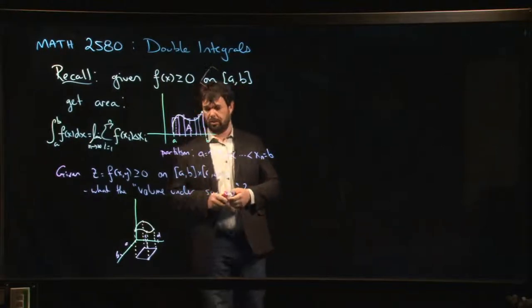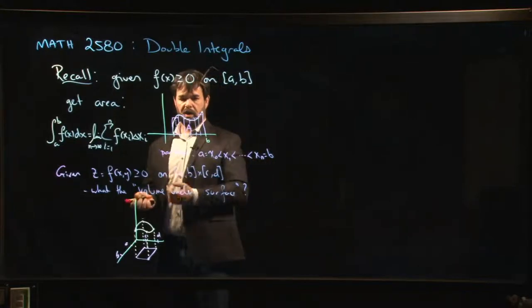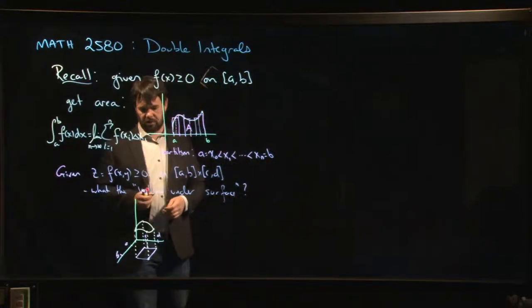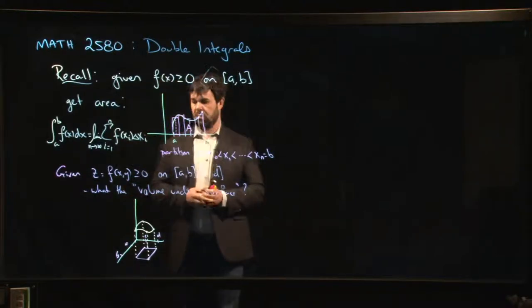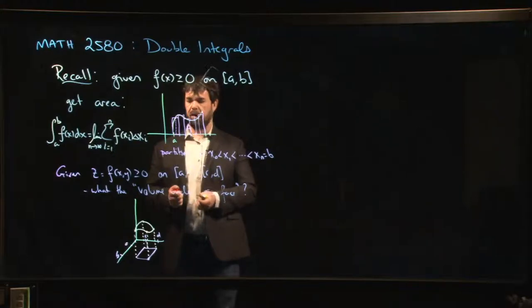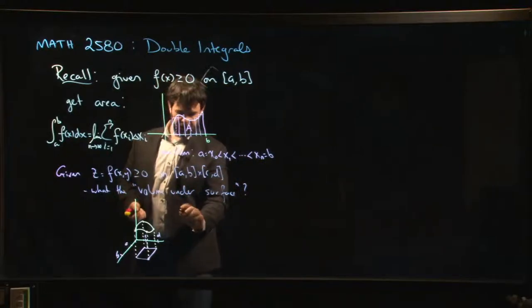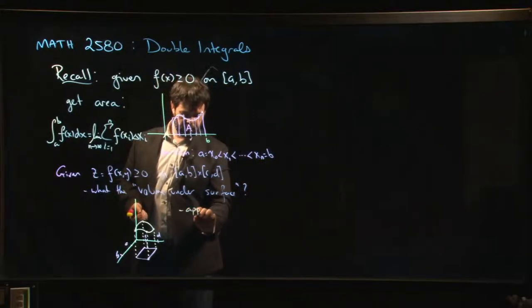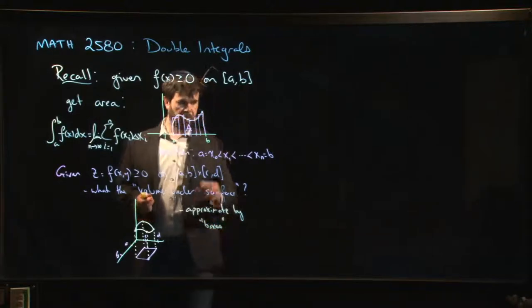And so the question is, how do you calculate this volume under a surface? And you take exactly the same approach that you did for area under a curve, right? Which is you say, I don't know how to calculate this volume exactly, but I can figure out how to calculate it approximately. So how would you approximate? Well, here we approximate by rectangles. So the next step would be, let's approximate by boxes.